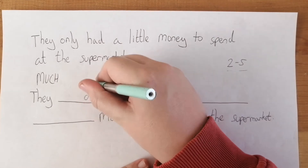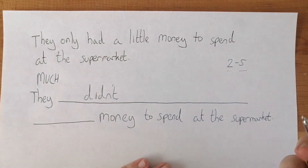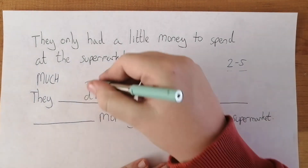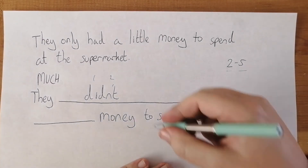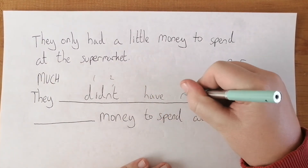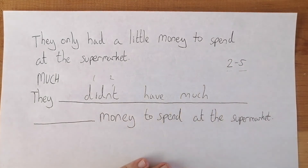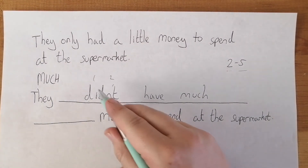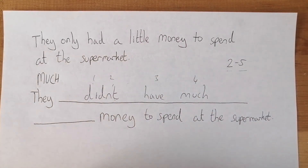So it would be 'they didn't' or 'they did not' — if you write 'didn't,' it counts as two words. So: 'they didn't have much money.' They only had a little — tenían poquito, no tenían mucho — they didn't have much money. That's 'didn't' and one, two, three, four words — so we're perfectly within the limits.